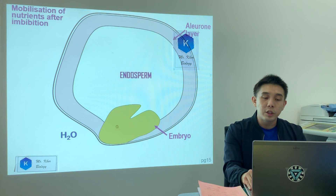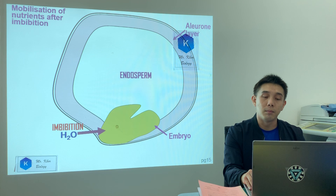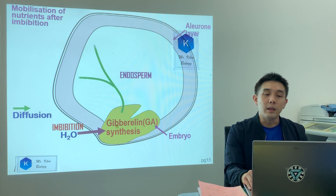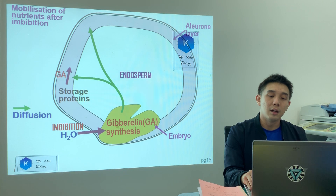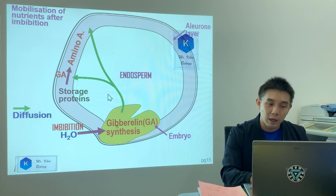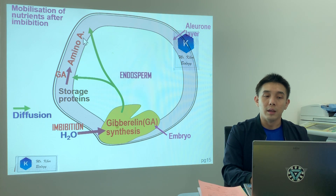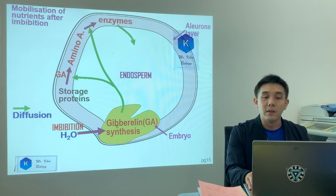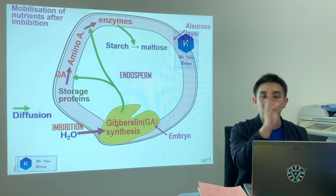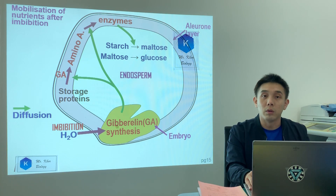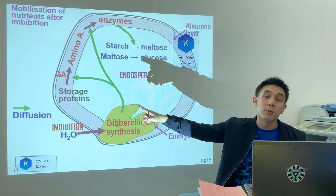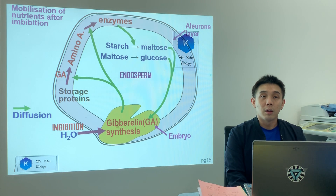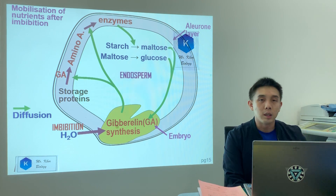Let's recap. First point: imbibition occurs — water is taken up by the embryo for gibberellin synthesis. Gibberellin diffuses into the aleurone layer. Two functions: number one, it breaks down protein to amino acids; number two, amino acids are converted to produce enzymes. Example: amylase breaks down starch to maltose, then maltose to glucose. Maltase can also be mentioned. All of this is in turn used to synthesize energy. That's the full process.